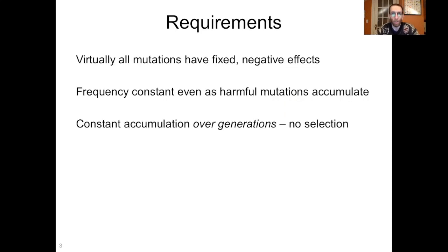Sanford is very particular about this argument. He lays out a number of specific components and details required for his model to work. First, virtually all mutations have a fixed negative effect — meaning all mutations are harmful, and that effect on fitness does not change based on context, like the ecological context or the presence or absence of some predator. Second, the frequency of harmful mutations remains constant at approximately 100%, even as harmful mutations accumulate within a genome. Third, this accumulation is constant over generations — in other words, there is no selection able to weed out these mutations; they just accumulate and accumulate.